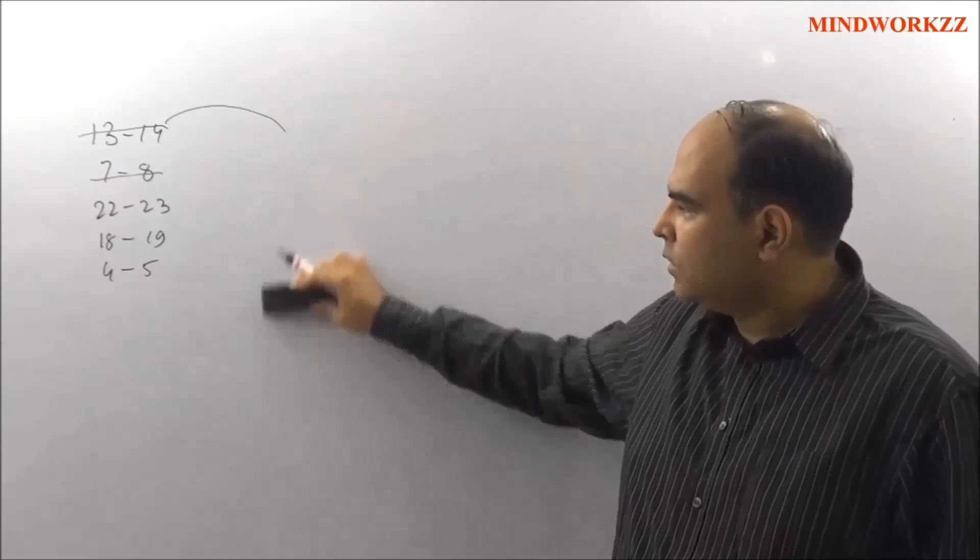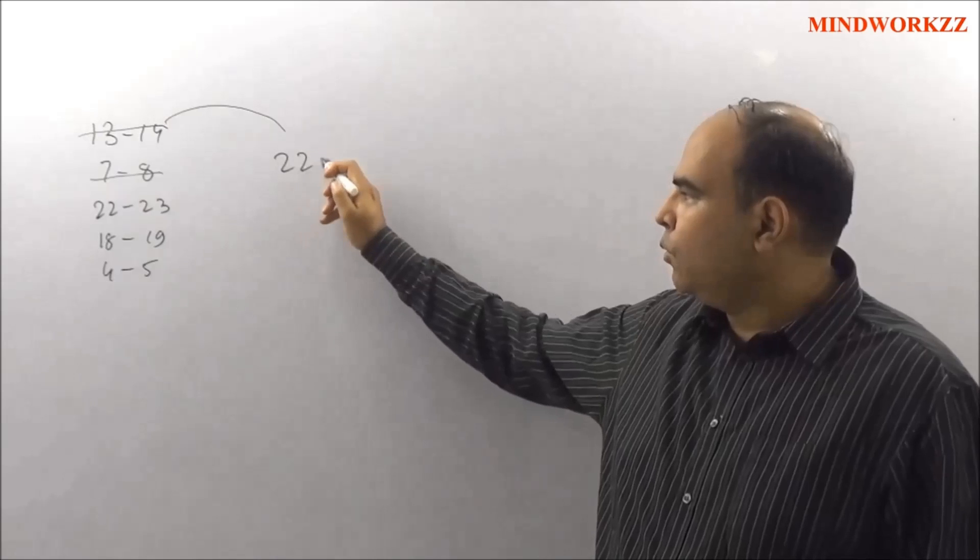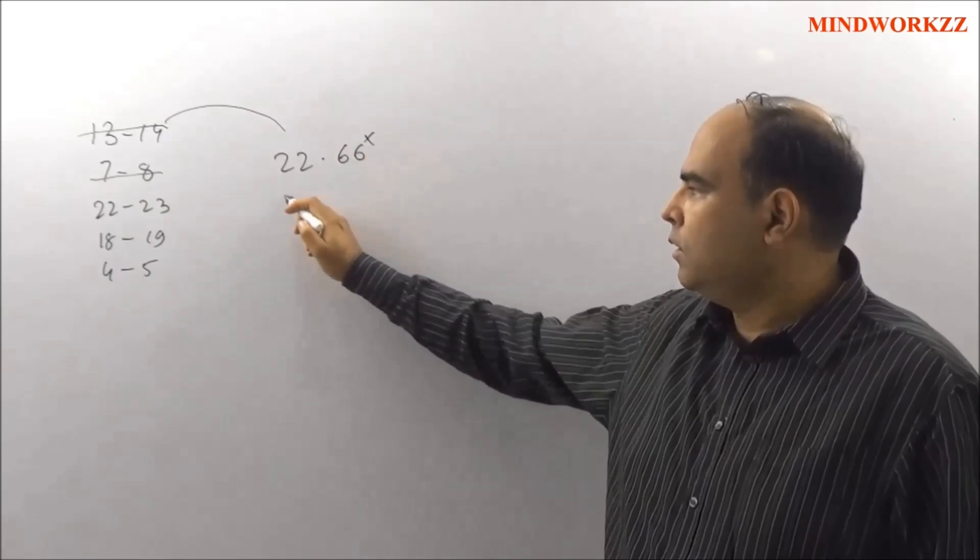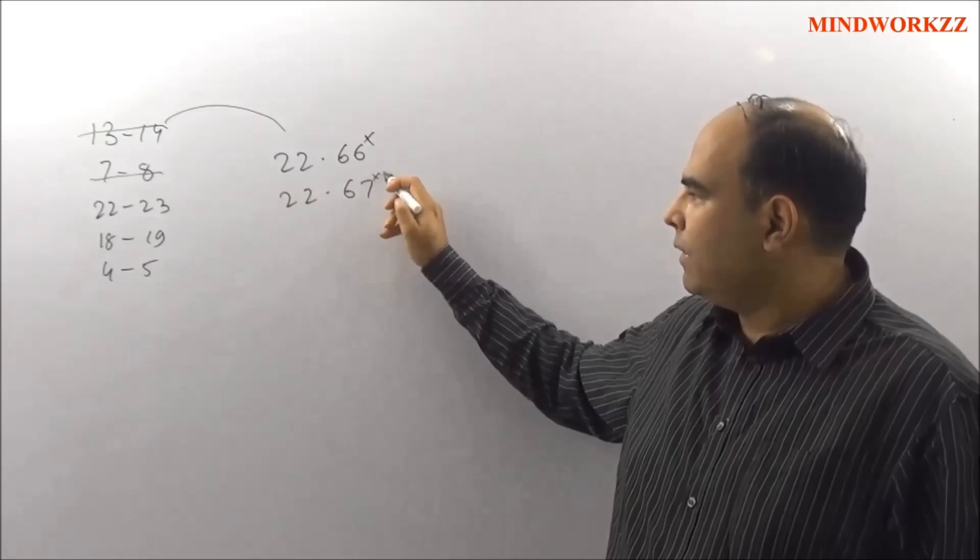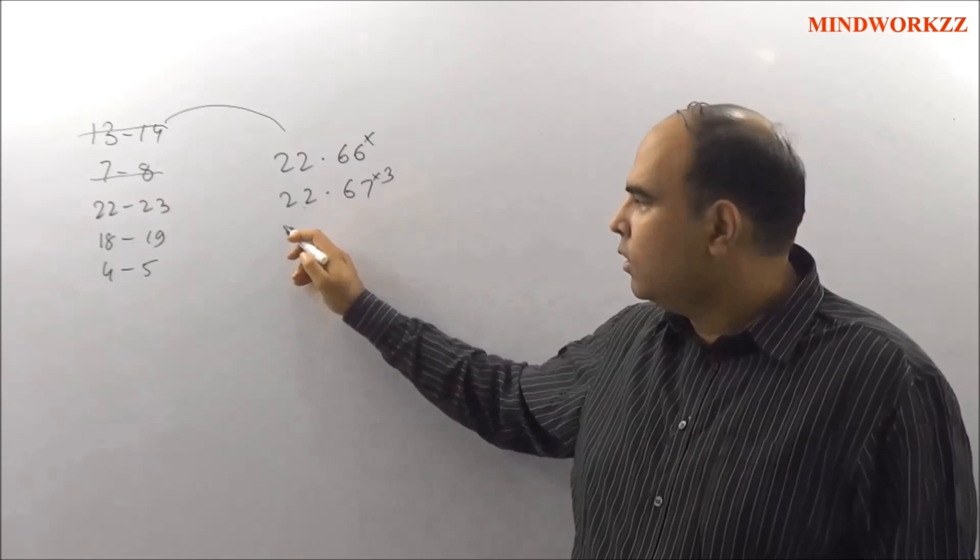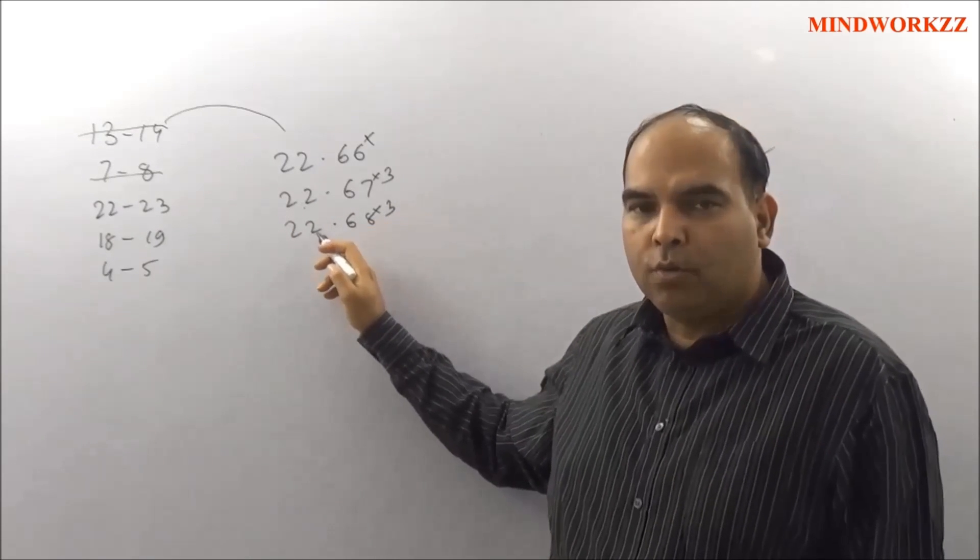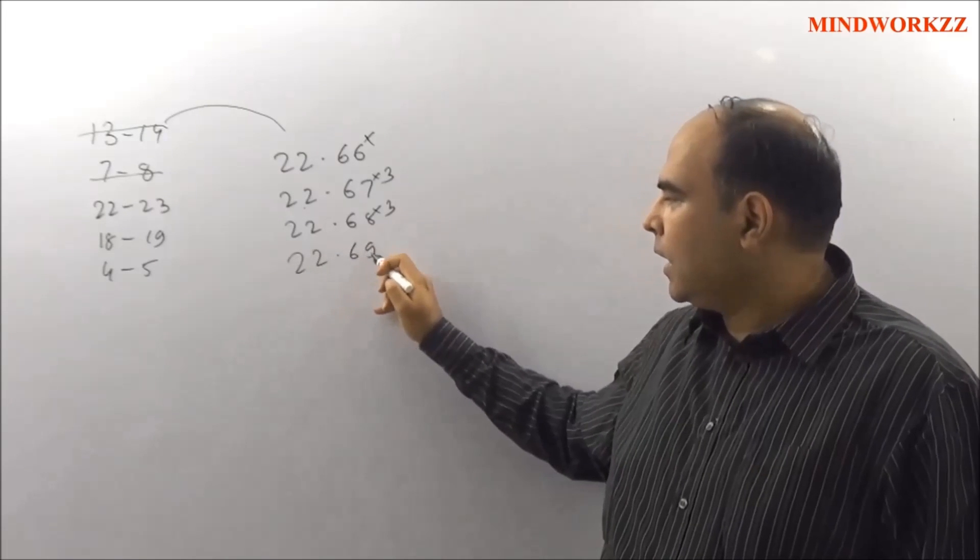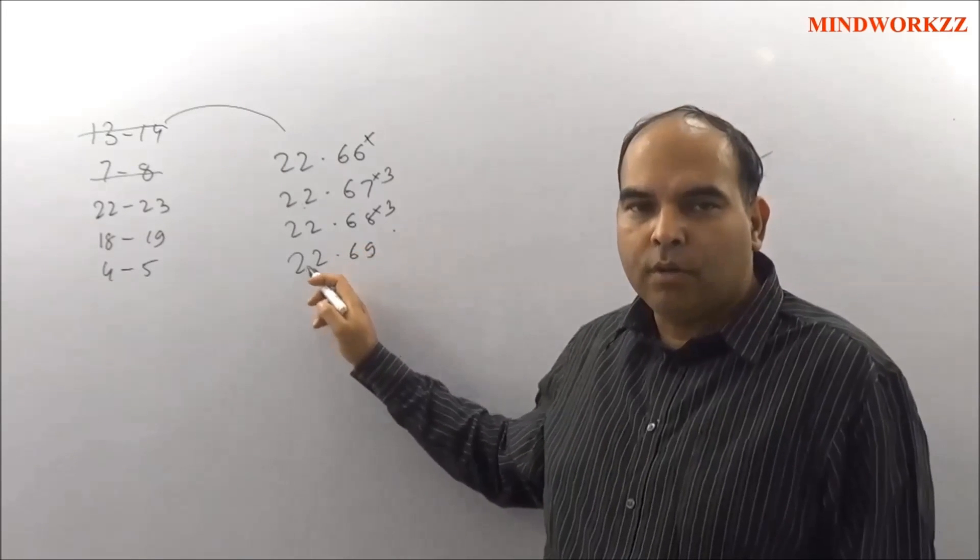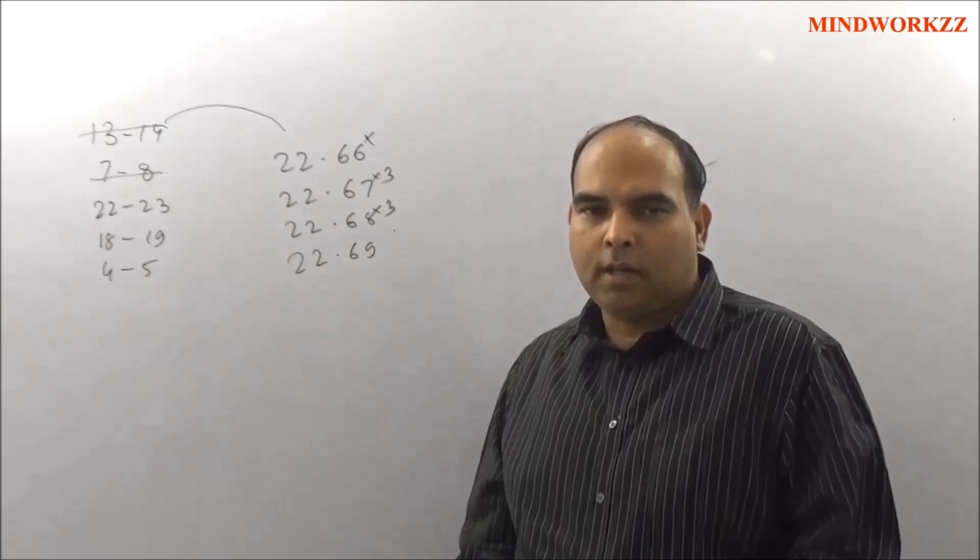You go to 22 rupees. With 22.66, that won't work. 22.67, 7 times 3 does not give me 2. 22.68, 8 times 3 is 4, does not give me 2. 22.69, 9 times 3 is 7, does not give me 2. So 22 to 23 is gone. Another 10 second check.